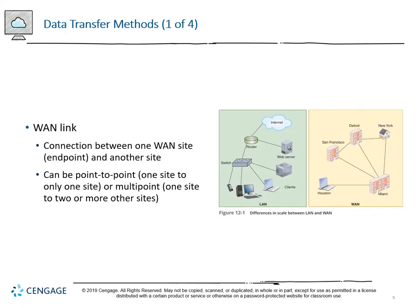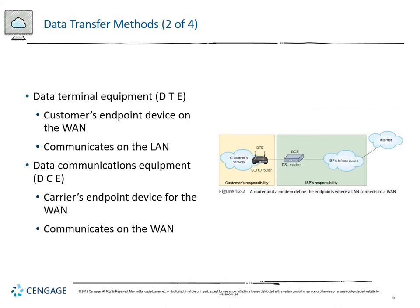A WAN link operates as a connection between one WAN site and another, often referred to as endpoints. These connections can be from one site to another, or multipoint where one site is connected to two or more sites. We often have two different data transfer methods: DTE and DCE. Data terminal equipment (DTE) is the customer's endpoint on the WAN, while the DCE is the carrier's endpoint. DTE is local, DCE is the wide area.